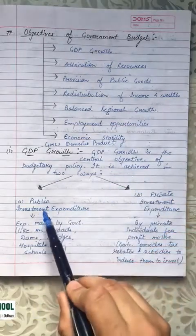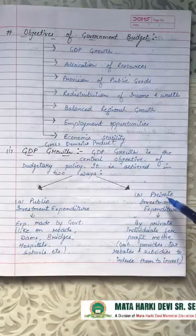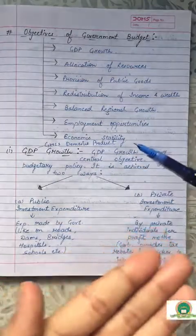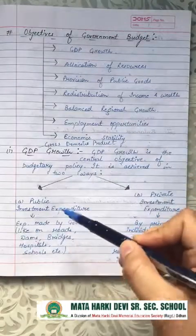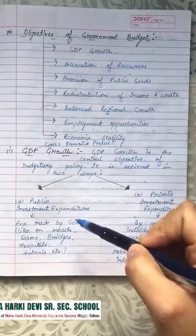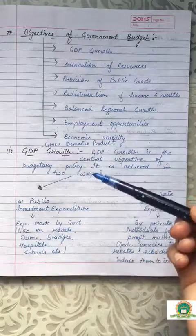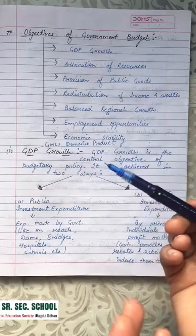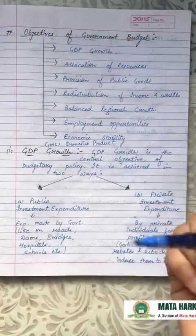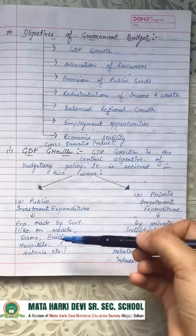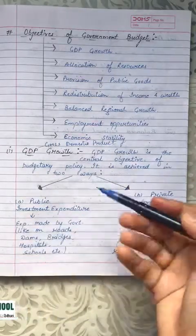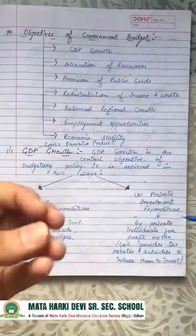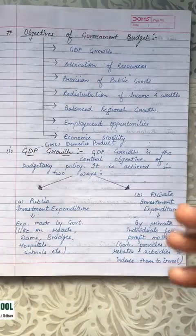GDP growth is achieved in two ways: one is through public investment expenditure and second is through private investment expenditure. Public investment expenditure means investment by the public sector or government — the government invests in industries that the private sector doesn't set up, such as roads, dams, bridges, hospitals, schools, and ration depots.